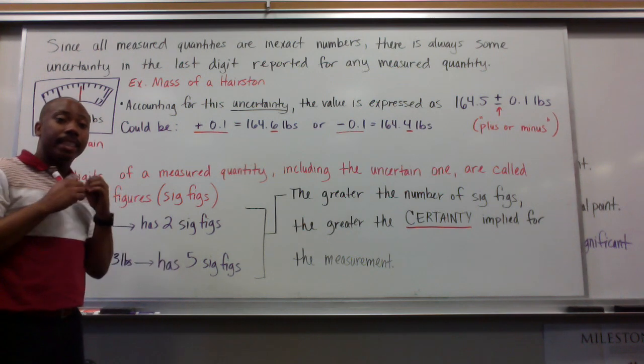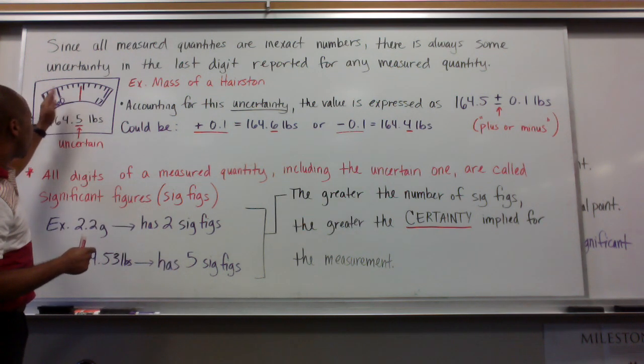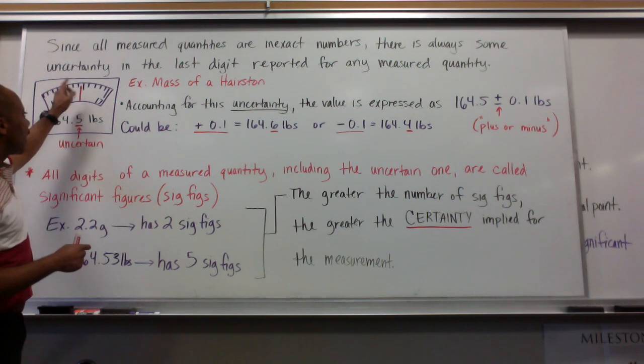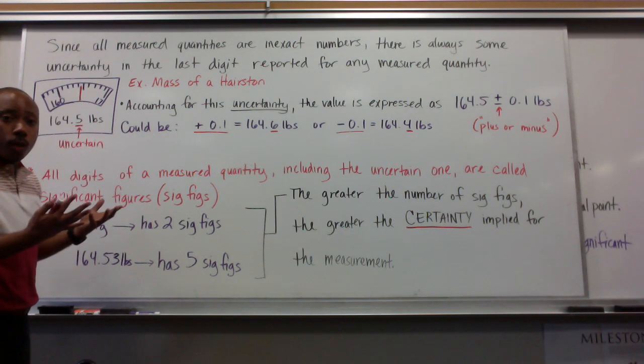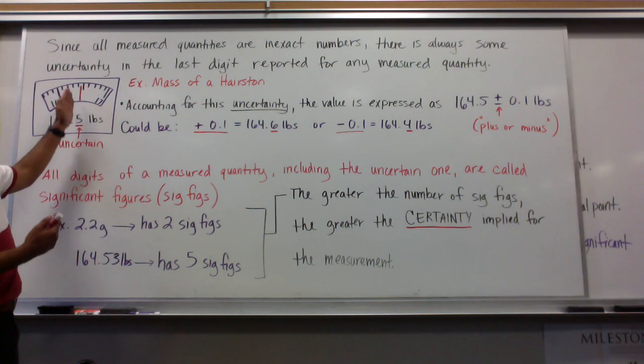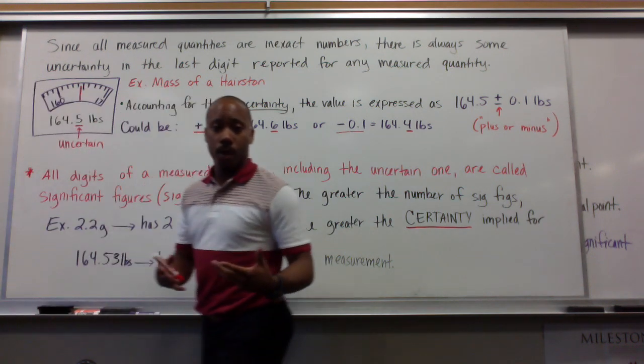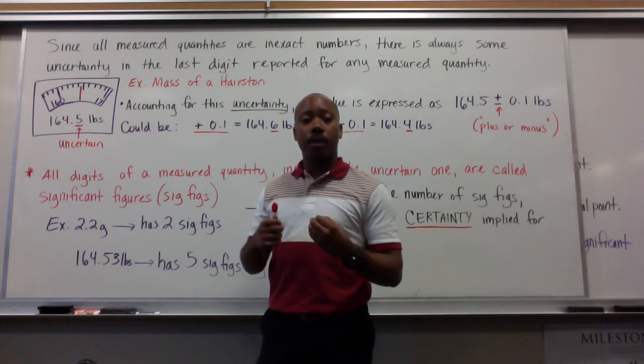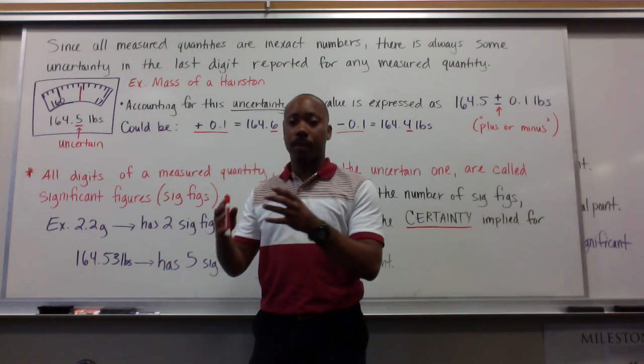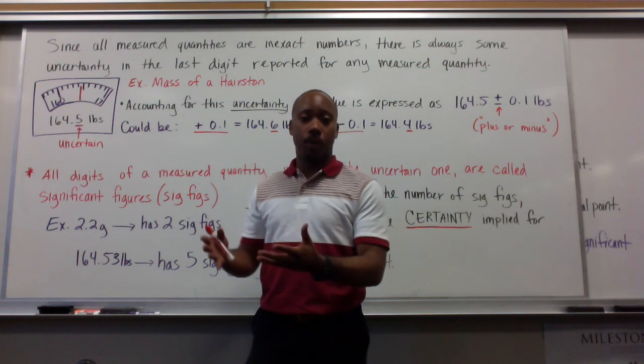It's uncertain. I have to take a guess at that last digit. So, I know it's 164 because it's clear - 160, 1, 2, 3, 4. Then I have to guess on that last digit. So, my guess is going to be a 5 because it looks kind of like it's in the middle somewhere. Am I certain? No. But it looks like it might be. So, I take a guess. That's why there's uncertainty in measured quantities - because we have to guess on that last digit to try to be as precise as we can possibly be.